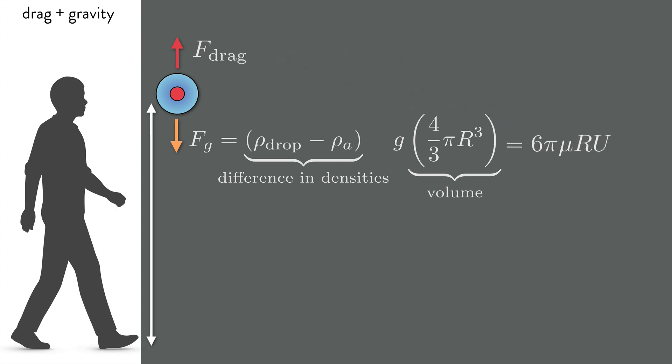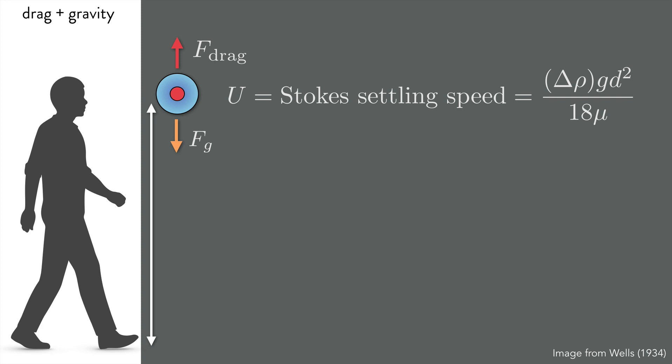There is a point where air resistance can balance gravity. Equate the two and solve for the speed u where this happens. This gives the Stokes settling speed, written here in terms of the diameter d. The key observation is that the settling speed is proportional to the surface area of the droplet, and hence the square of the diameter.